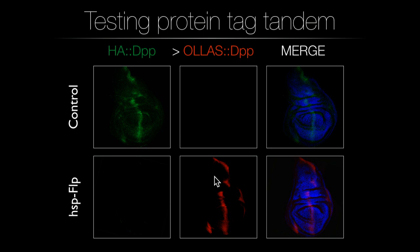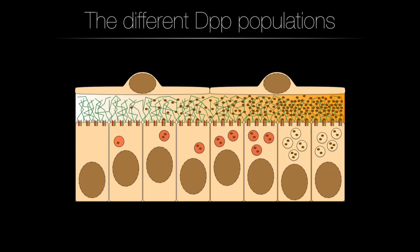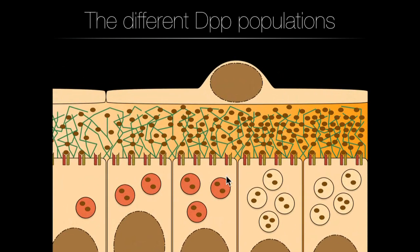Knowing the system works, the next step is to measure the gradient and its different parameters. It's important to know that there are two different populations of DPP in the wing disk: the intracellular population in the producing and degrading cells, and the extracellular population. The intracellular signal — especially in secreting cells — is so intense that intracellular staining will never reveal the extracellular protein. So I need two different staining approaches: intracellular to see when protein is produced or stopped, and extracellular to see gradient shape and protein levels in the tissue.